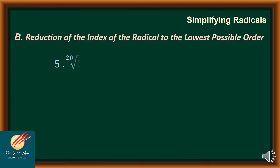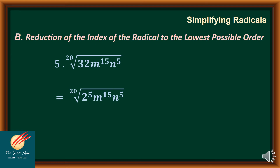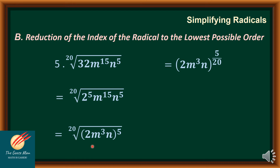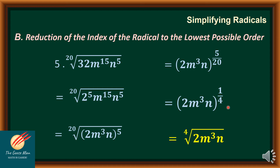Say for instance I have the 20th root of 32m³n to the 5th power. First, express 32 in exponential form as 2 to the 5th power, then find the common factor of the exponents 5, 15, and 5, which is 5. Using the law of exponents, factor it out so that the 20th root of (2m³n)⁵ can be expressed as (2m³n) raised to 5 over 20. Reducing 5/20 by dividing both numerator and denominator by 5 gives 1/4. So the final expression in radical form is the 4th root of 2m³n.